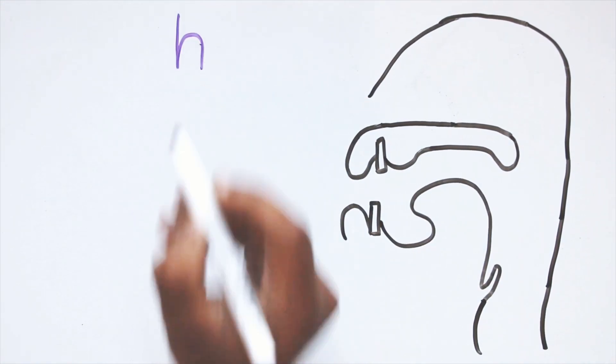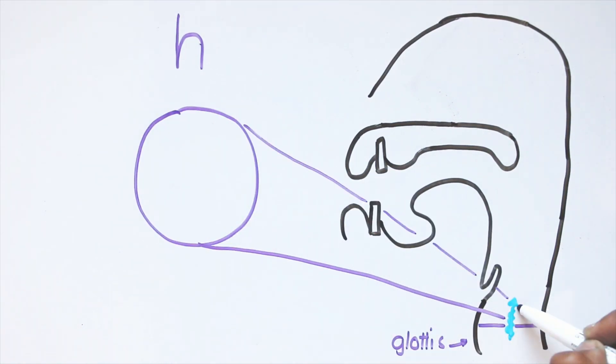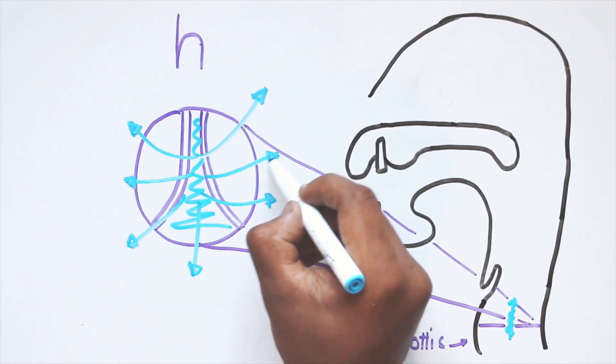Last but not least, we have h, which is quite a special type of fricative. It is produced with a glottal constriction, which is where the flaps of the glottis open just far enough for air to pass through and undergo friction.